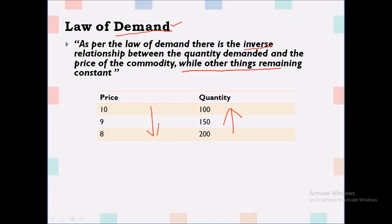The law is complete only while other things remain constant — that is, ceteris paribus. The 'other things' here refer to other determinants of demand. So whenever you are writing the Law of Demand in an examination, mention that there is an inverse relationship between price and quantity, but also state that other things are kept constant.